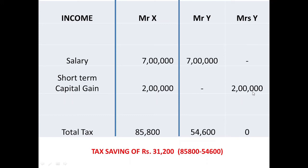Now Mr. Y does the trading in his wife's account. Mrs. Y has earned 2 lakhs. On the 7 lakhs salary, Mr. Y paid a tax of 54,600, and on this 2 lakhs Mrs. Y does not have to pay any income tax — she is paying 0 tax, because up to 2,50,000 there is no tax. So Y has saved 31,200 rupees just with this tax planning.